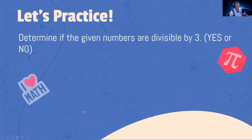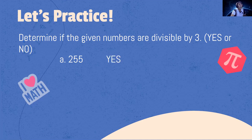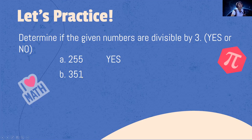Let's practice. Determine if the given numbers are divisible by 3. 255: 2 plus 5 plus 5 is 12, and 12 divided by 3 is 4 — so 255 is divisible by 3. 351: 3 plus 5 plus 1 is 9, and 9 divided by 3 is 3 — so 351 is divisible by 3.